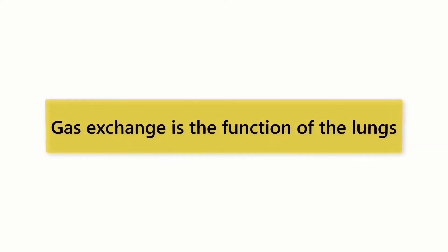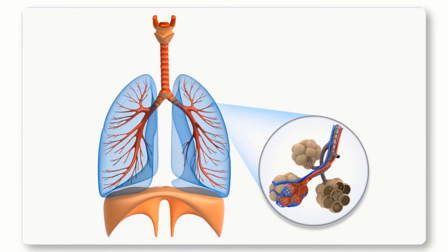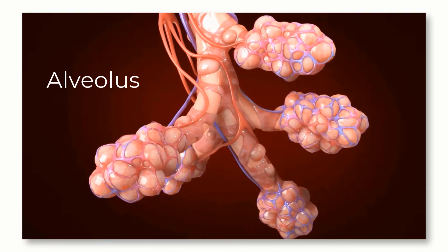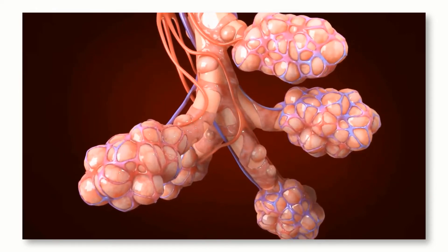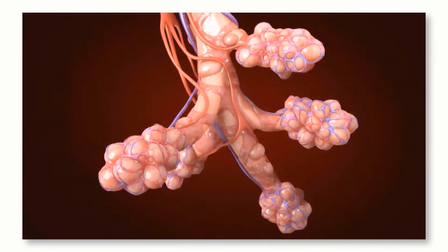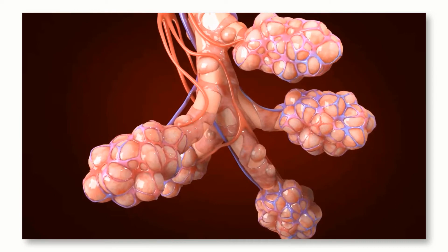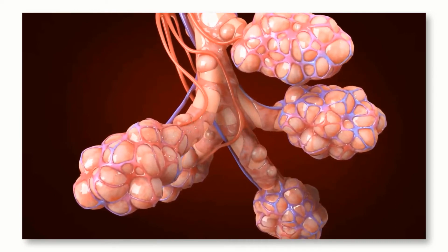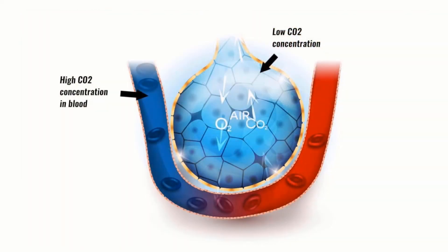Gas exchange is the function of the lungs. The lungs have the ability to regulate the gases in the blood through gas exchange. The bronchioles in the lungs bring air into the alveoli, the singular of which is pronounced alveolus. The alveoli are the portion of the lungs where gas exchange occurs. All alveoli are surrounded by capillaries. As air fills the alveoli from the bronchioles, the alveoli expand, exposing the blood in the capillaries to the gases in the alveoli. At this point, gas exchange can occur. Due to concentration differences of the gases in the alveoli and gases in the blood, diffusion of gases drives gas exchange.